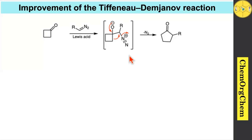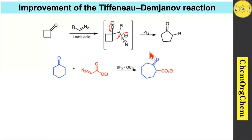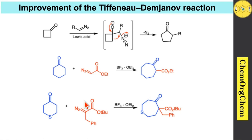Here are some examples based on this advanced procedure. When you take cyclohexanone which reacts with the diazo compound in the presence of BF3 etherate as Lewis acid, BF3 etherate readily coordinates with the carbonyl center, then the diazo compound attacks, producing this type of intermediate, followed by rearrangement to produce the ring-expanded ketone product. Here is another example: thiopyranone reacts with the diazo compound in the presence of BF3 etherate which produces the corresponding ring-expanded product.